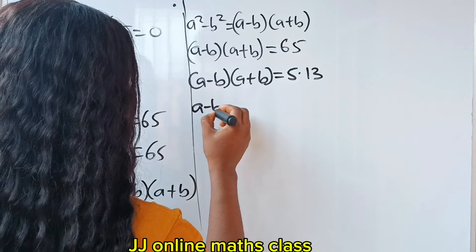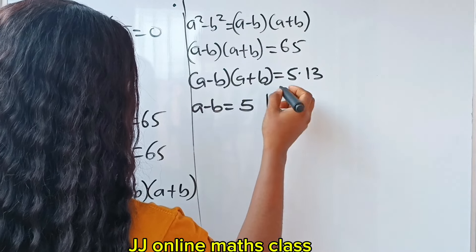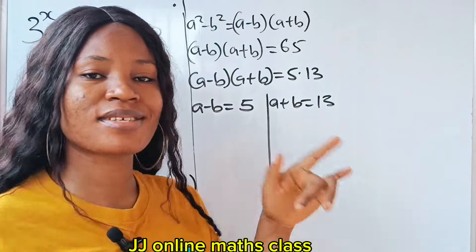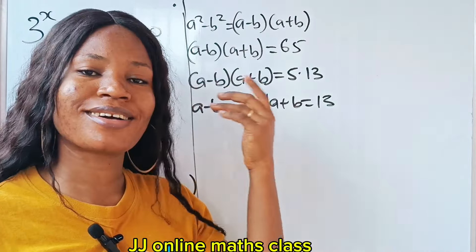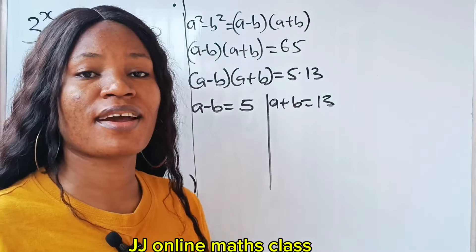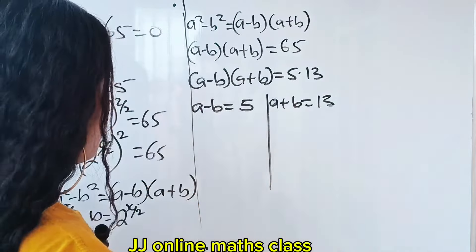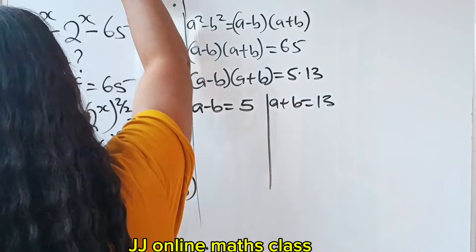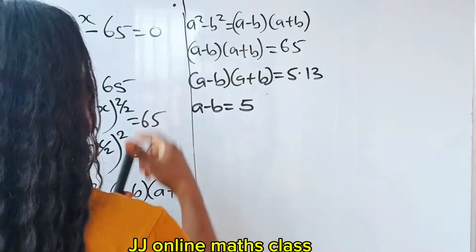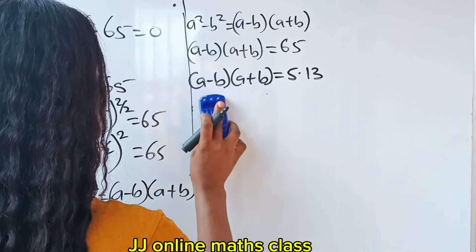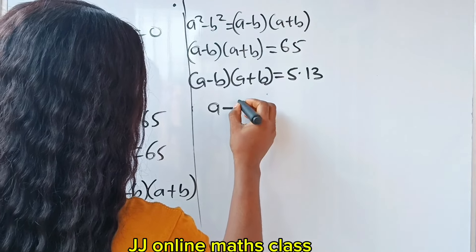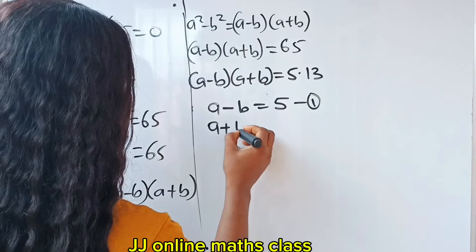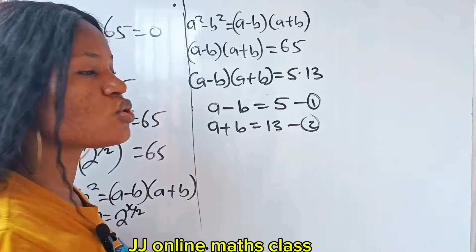So we say a minus b is equal to 5, and a plus b is equal to 13. We are going to solve this simultaneously. Let's call a minus b equals 5 equation 1, and a plus b equals 13 equation 2.